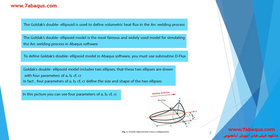In order to define the Goldak double ellipsoid model in Abaqus software, we should use the subroutine DFLUX. The Goldak double ellipsoid model is composed of two ellipses which are drawn by means of four parameters: a, b, cf, and cr. These four parameters define the size and shape of the two ellipses.